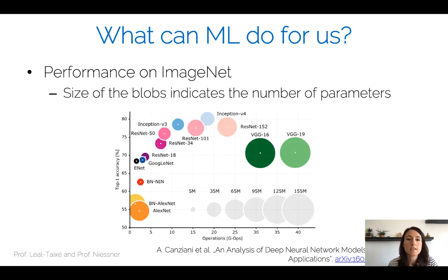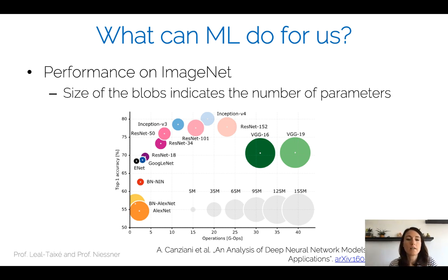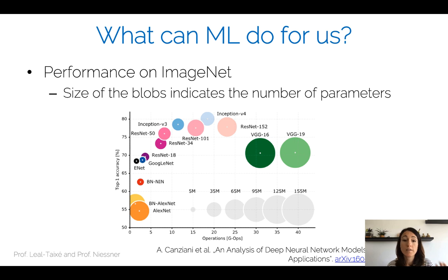In this graph we can see the actual performance of neural networks on the ImageNet dataset. The size of the blocks indicates the number of parameters. We can see in the bottom left corner the AlexNet architecture — the starting point for computer vision scientists to realize that deep learning was really powerful for image classification and beyond. Since AlexNet, there have been many architectures developed: GoogleNet, ResNet, and others, which have steadily increased accuracy on the ImageNet classification challenge.